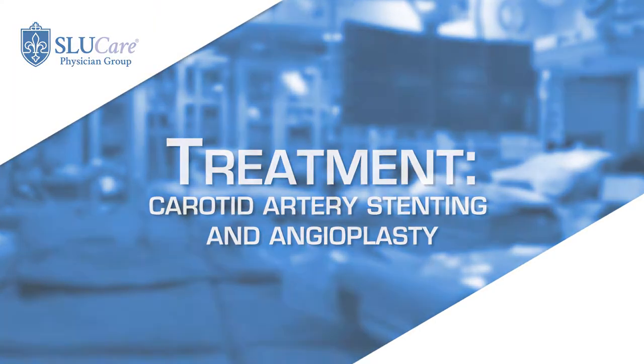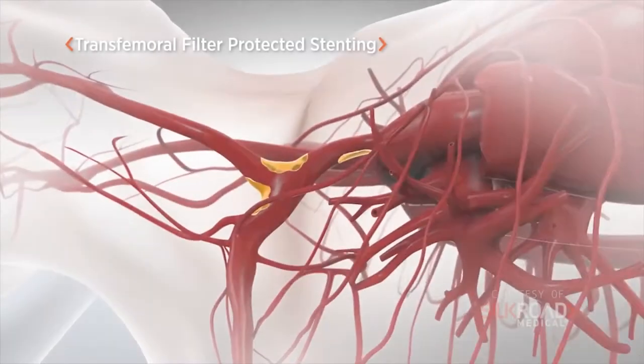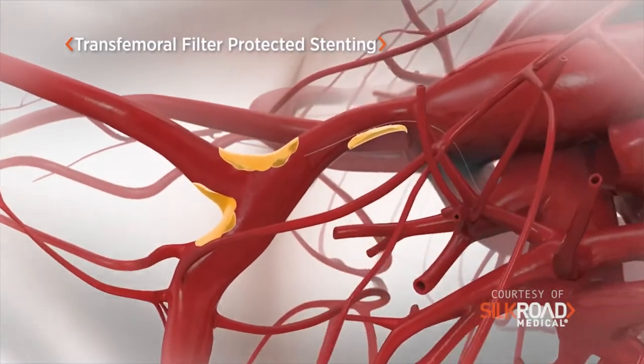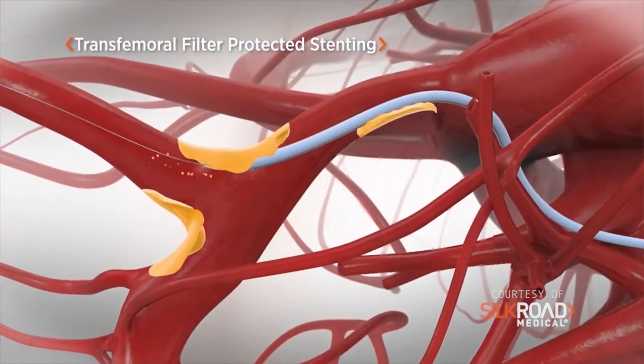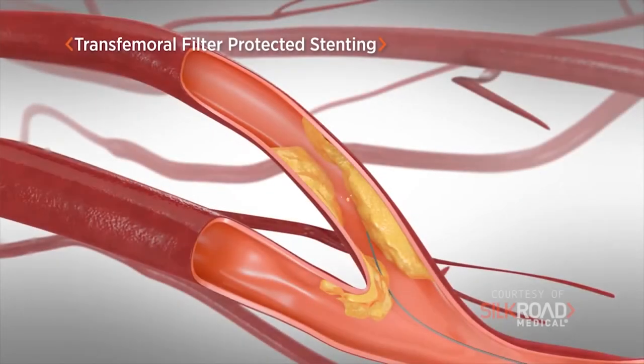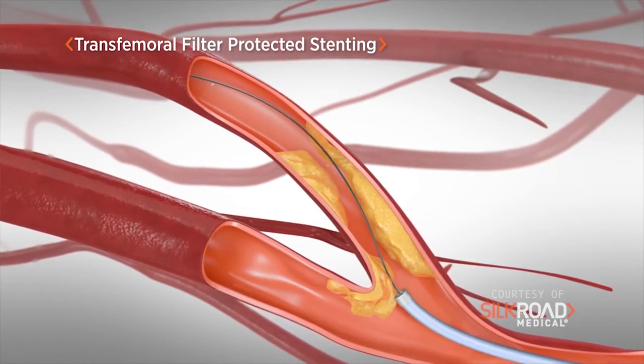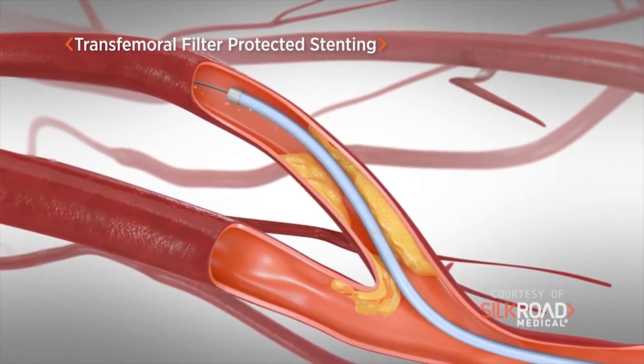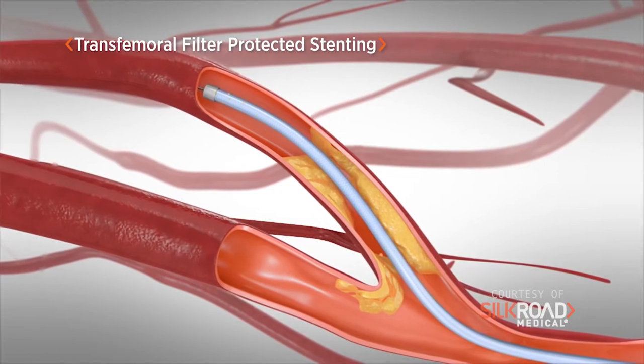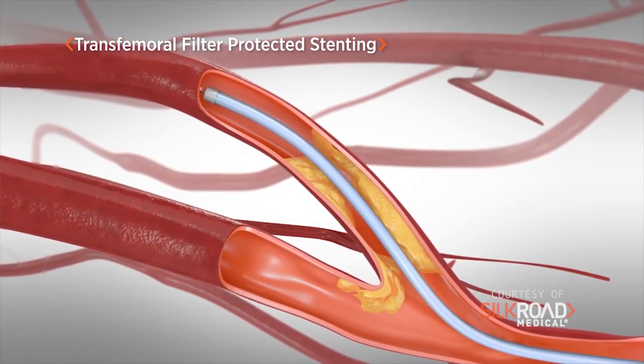Over time we've developed other strategies as well, and that includes carotid stenting. In carotid stenting we come from the groin usually, and we access the artery there and place a catheter into the neck. From that catheter we shoot an angiogram, which gives us a picture of the artery from the inside and identifies the blockage. Once we have that blockage, we put a wire across it and place a stent in.